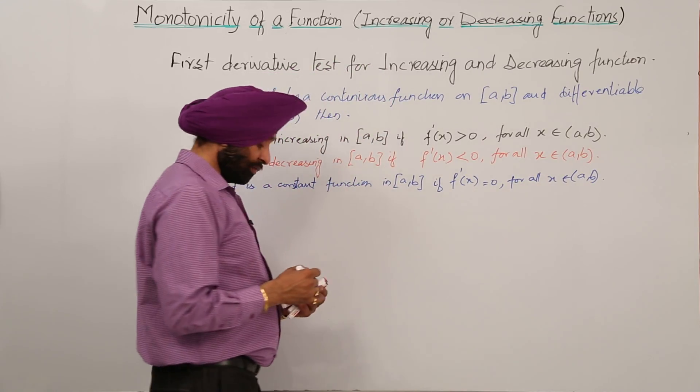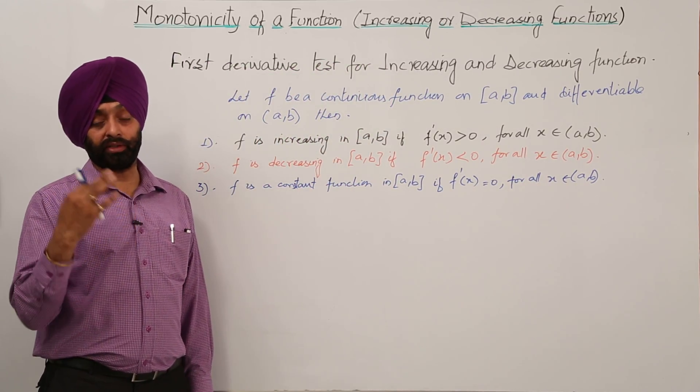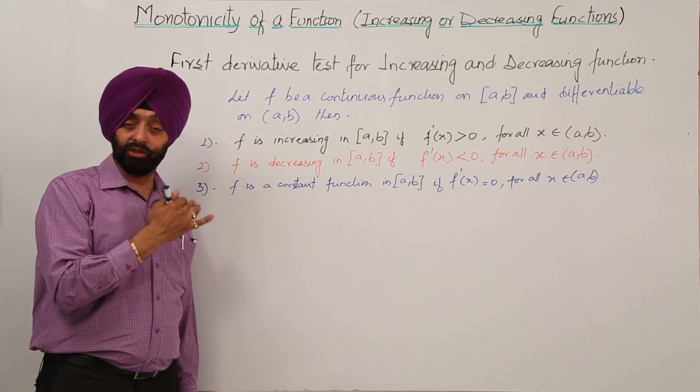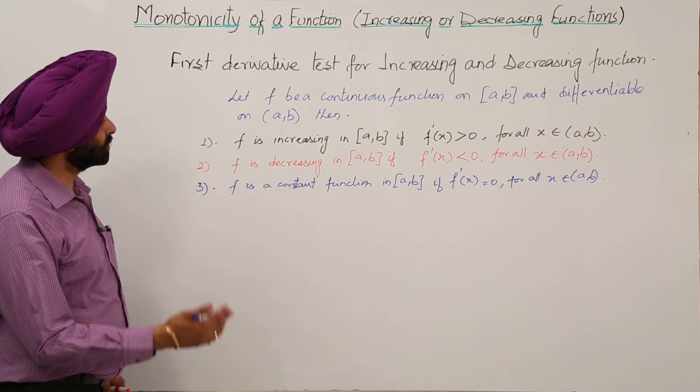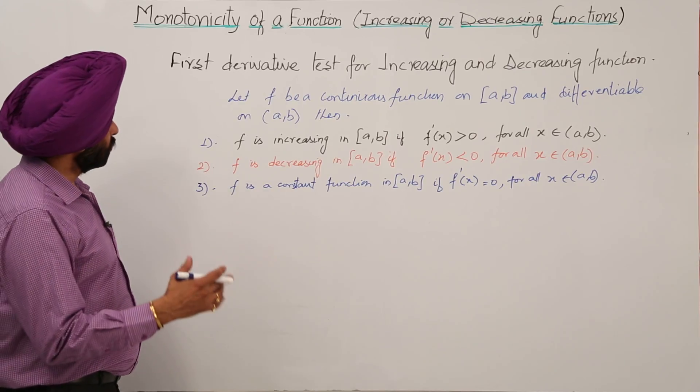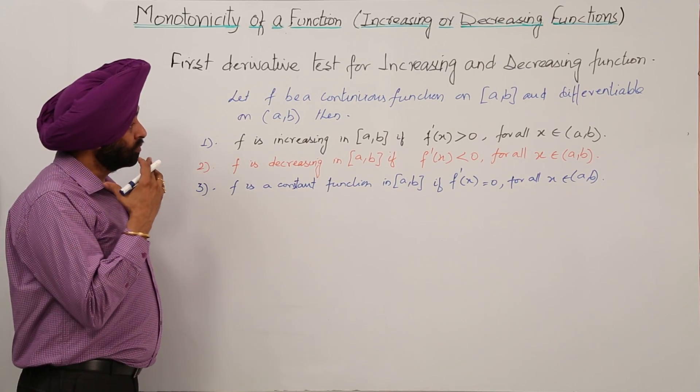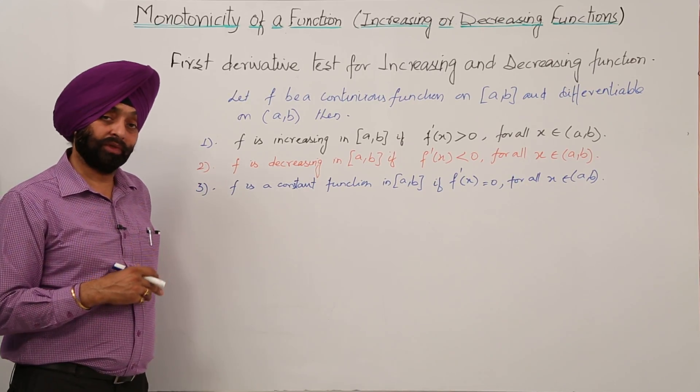Now we have 3 conditions: derivative of x greater than 0 is an increasing function, derivative of x less than 0 is a decreasing function, and derivative of x equals 0 is a constant function. Now we are going for some proofs for the first and second parts, or maybe all the parts.